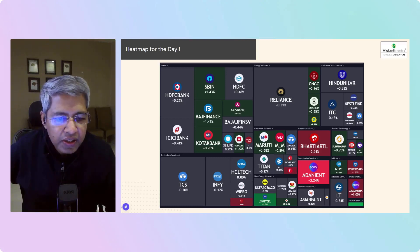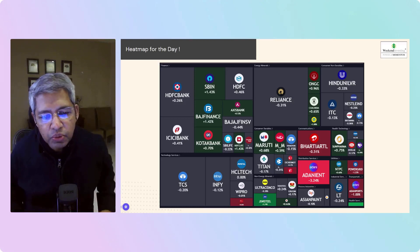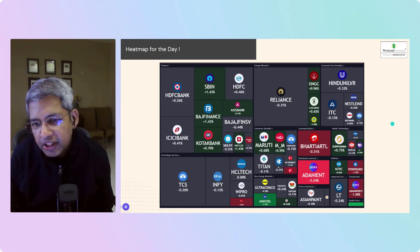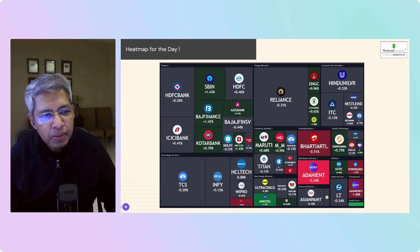Heat map for the day. You can see the most bright red spot here is Adani Enterprise. They are going to raise more money from the public, possibly a rights issue, minus 3.24%. Most other Adani stocks also taking some beating. State Bank, Bajaj Finance, HDFC Life, ONGC were the stocks which displayed near about 1% or more than 1% gain.